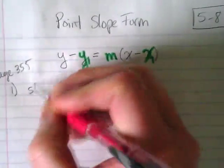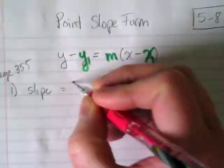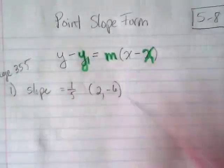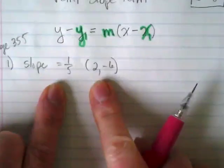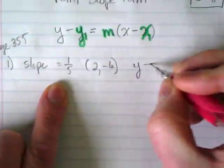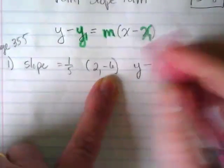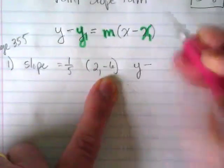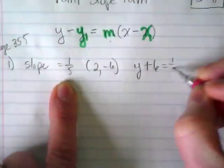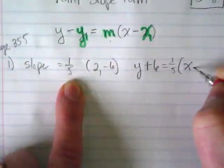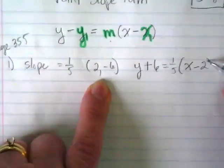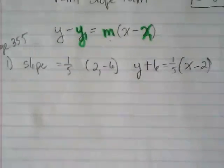Number one says our slope equals one over five, and then it gives us a point of two comma negative six. We're going to take these pieces and plug them into these variables. So let's rewrite this first as Y minus — what's the Y1 here? Negative six. In the formula there's a negative, and in this pair there's a negative, so that turns it into a positive six. Equals one over five times X minus two — in the equation there's a negative, and in our ordered pair it's a positive, so it becomes negative two. That's all you have to do.